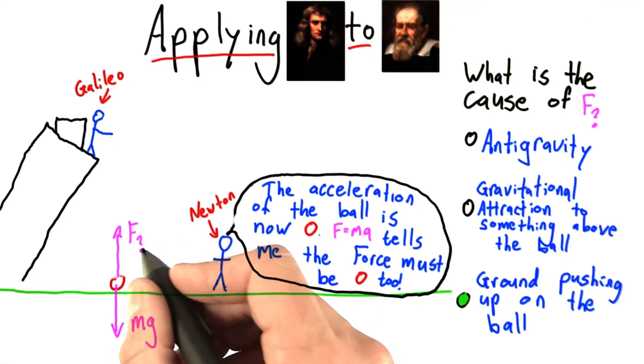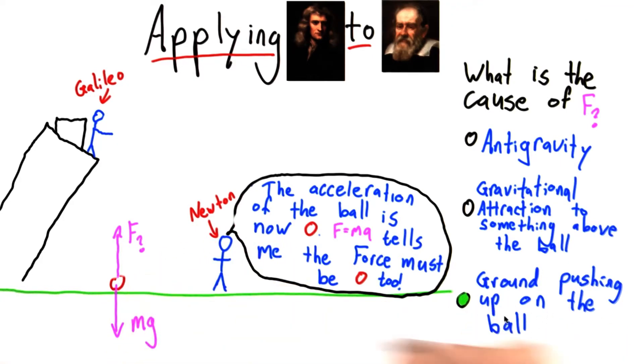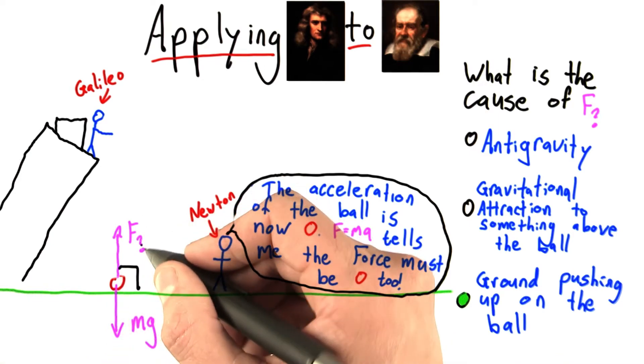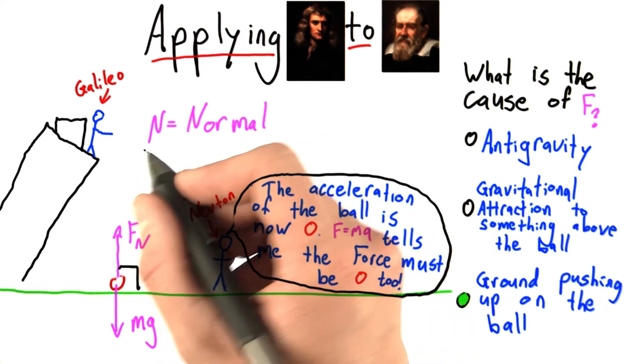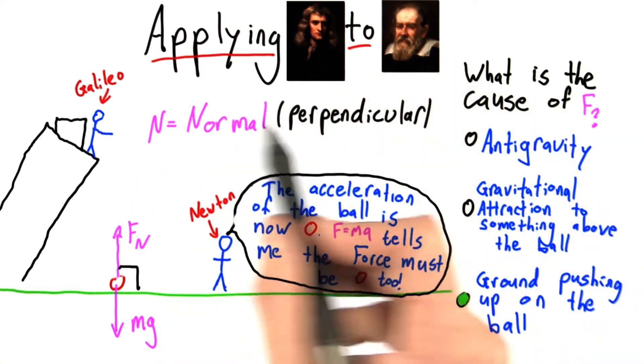One important thing to notice is that this force of the ground pushing up on the ball is always going to be perpendicular to the ground. This is a perpendicular force. In fact, let's call it Fn, where n means normal, and normal is just another word for perpendicular.